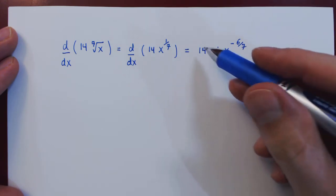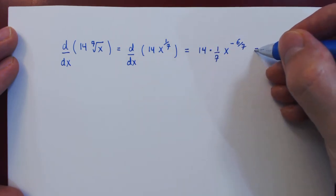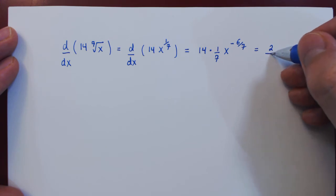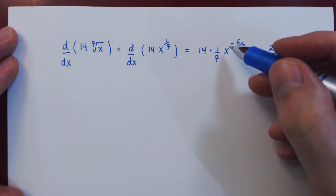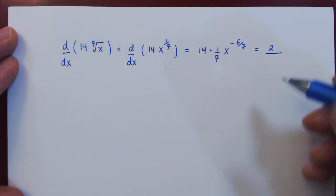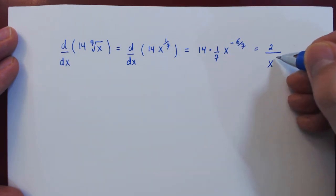We can, of course, simplify. 14 over 7 is 2. And if we wanted a positive exponent instead of a negative exponent, we can bring x down to the denominator and now the power becomes positive 6 over 7.